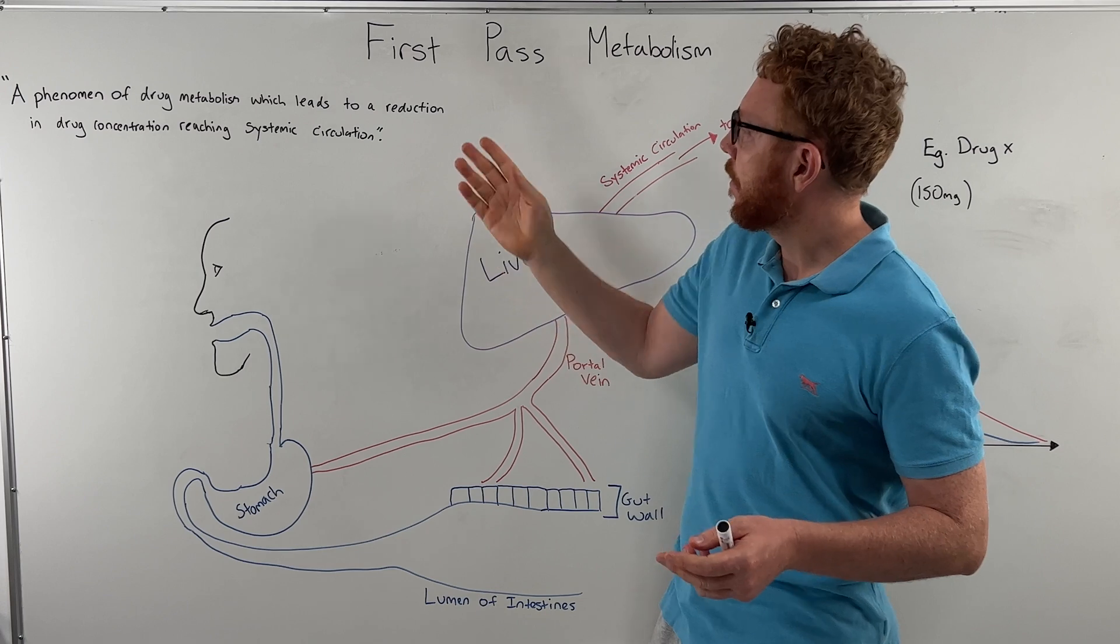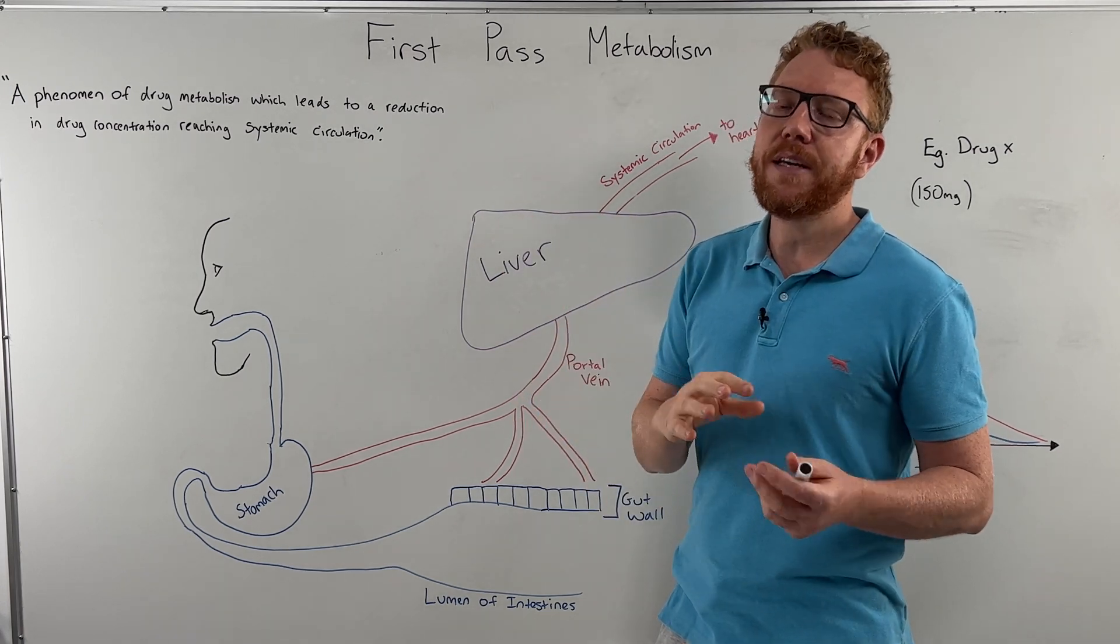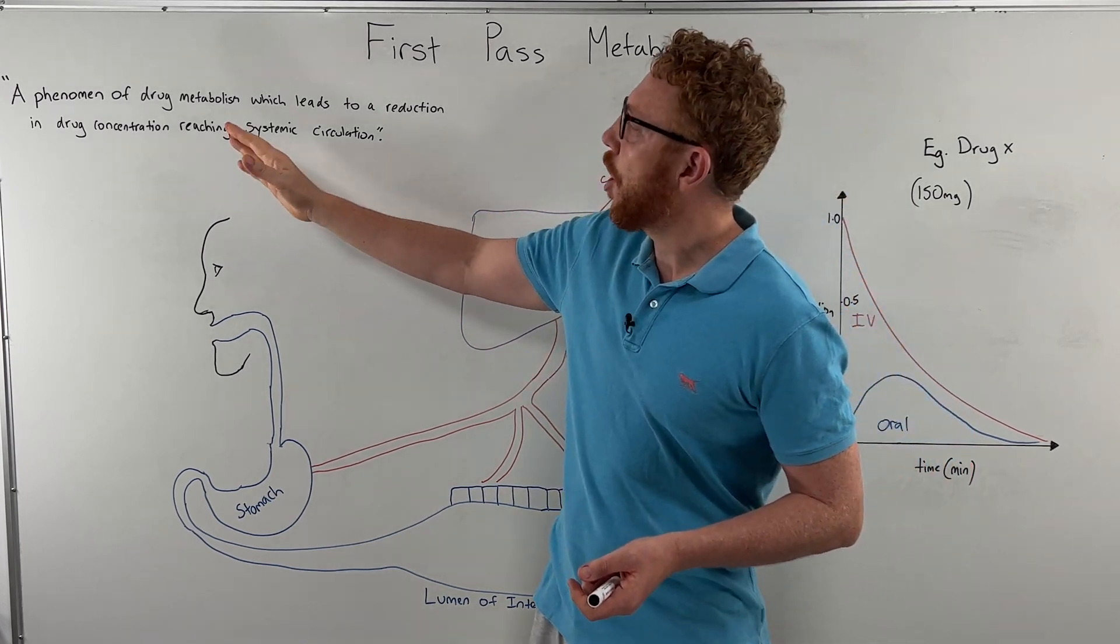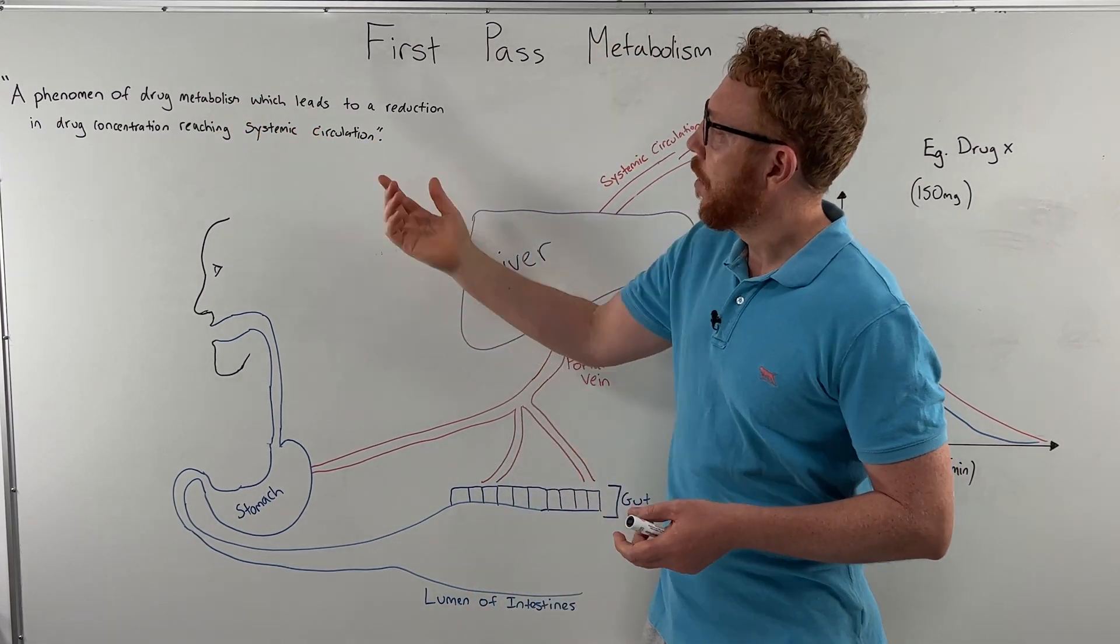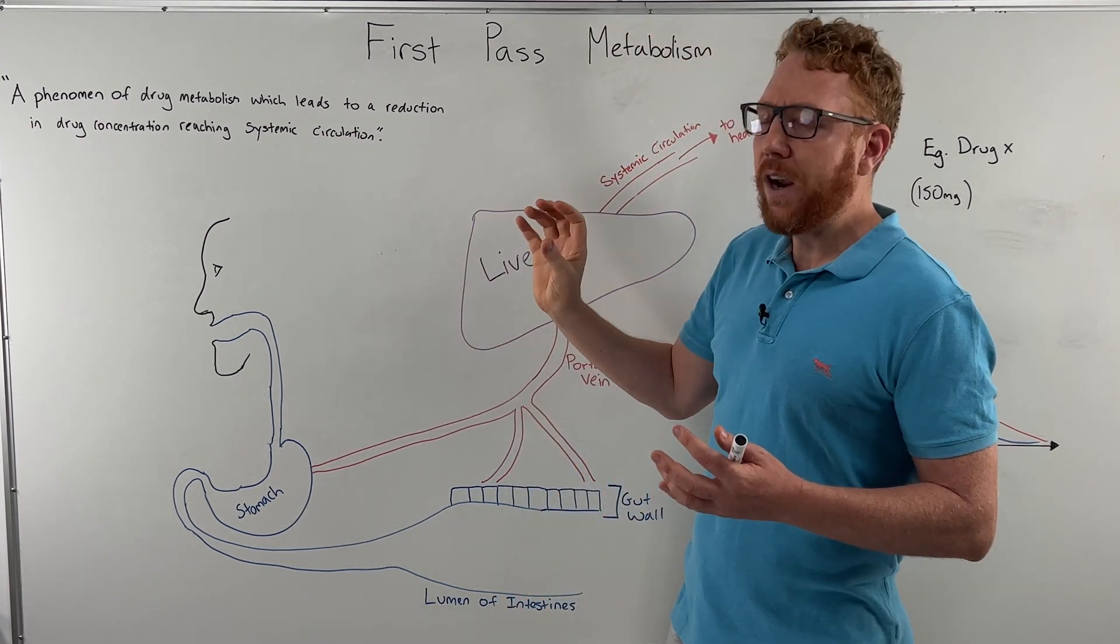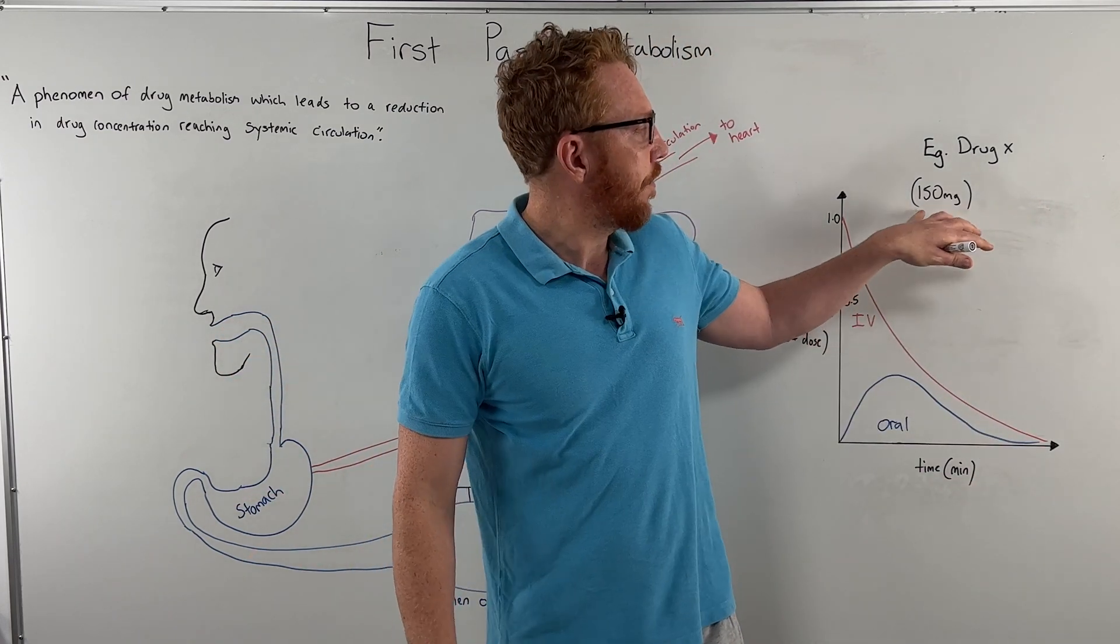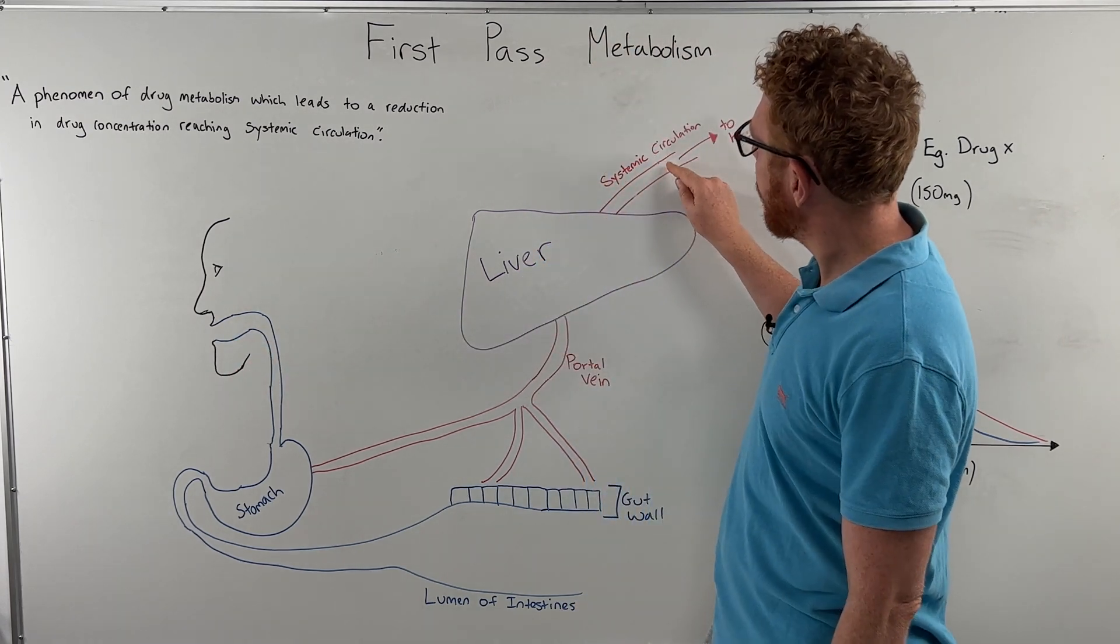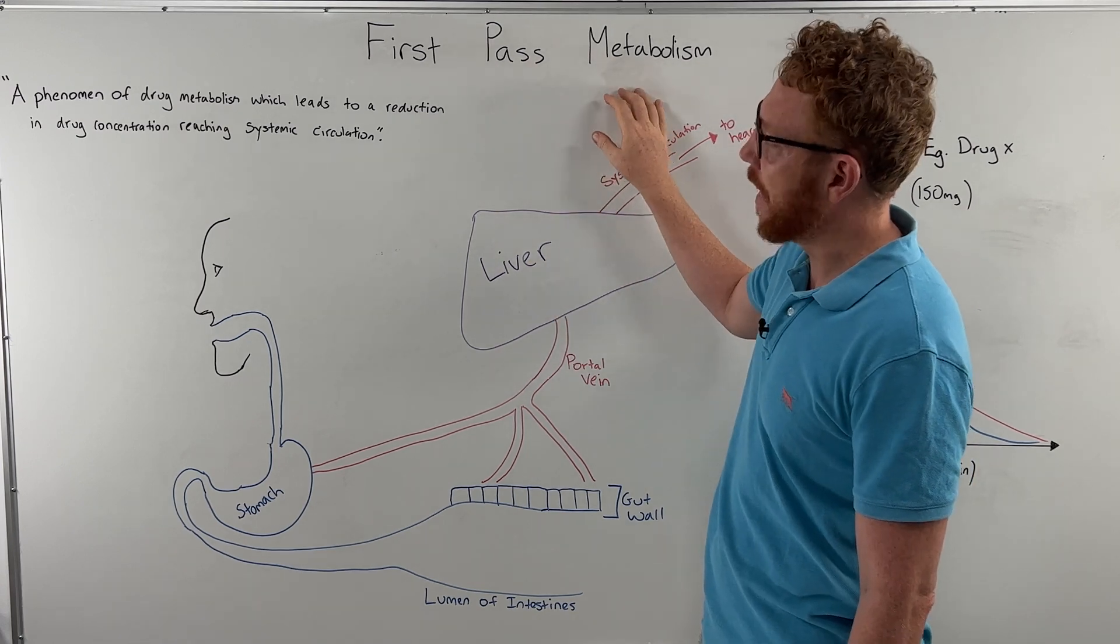So let's start with a definition. What is first pass metabolism, sometimes also known as the first pass effect or pre-systemic metabolism? First pass metabolism is a phenomenon of drug metabolism which leads to a reduction in concentration reaching the systemic circulation. So in reference to an oral medication, if we were to give a drug orally, let's say 150 milligrams, how much of that 150 milligrams will reach the systemic circulation? That's basically determined by the first pass metabolism.